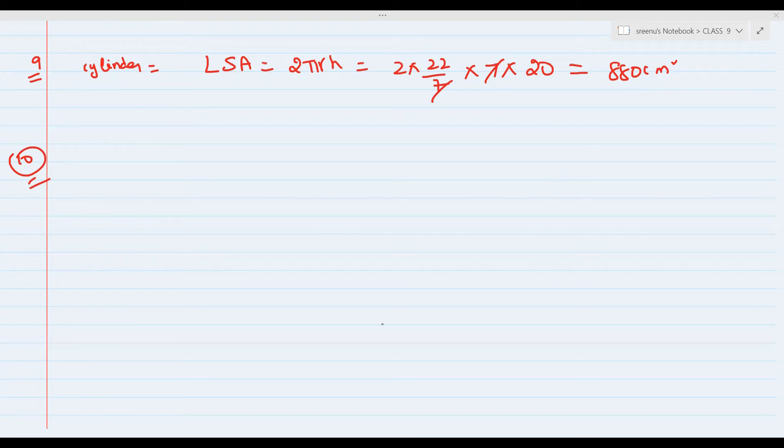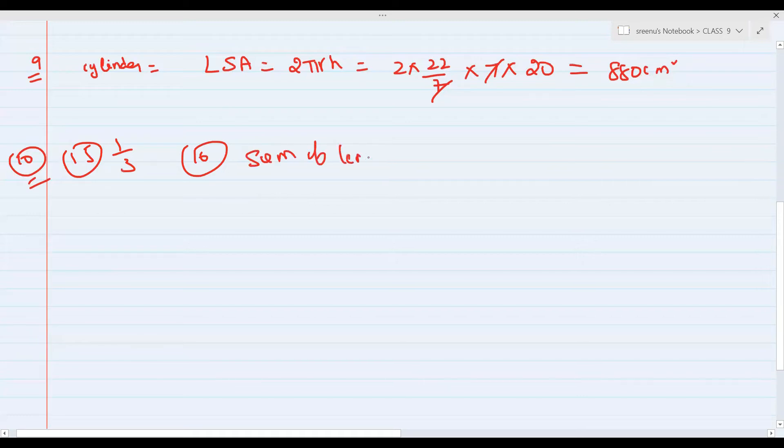15th is 1 by 3 and 16th is sum of length of edges, C. Yes sir. How is 1 by 3, volume of the pyramid? 1 by 3 of prism, right prism. Pyramid is 1 by 3 of right prism.